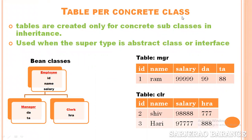In the Table Per Concrete Class strategy, tables are created only for concrete subclasses. Concrete subclasses means those subclasses which are not abstract classes — only concrete subclasses will have tables created for them. The second point is that it is used when the super type is an abstract class or interface.